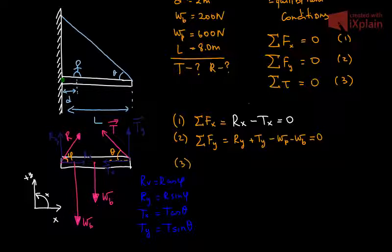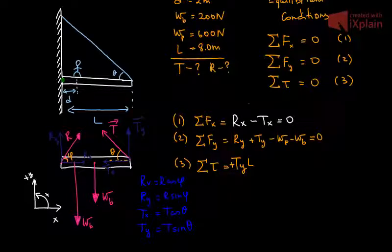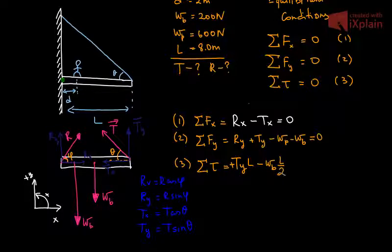Now let's write the third equation, sum of the torques. The Ty component of the tension contributes to the torque: Ty times L, the full length of the beam. Ty rotates the beam counterclockwise, so it's positive. The weight of the beam rotates the beam clockwise, giving a negative torque: minus weight of the beam times L over two.